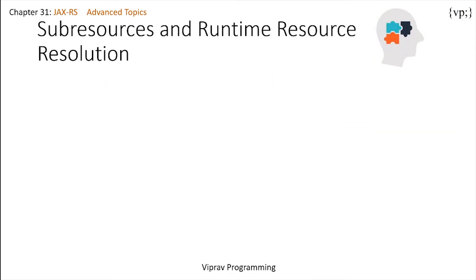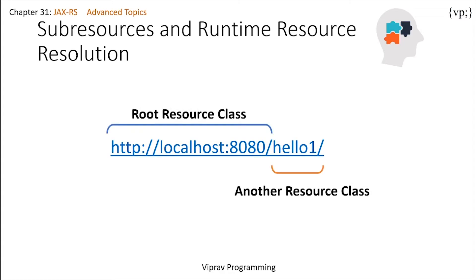Sub-resources and runtime resource resolution: you can use a resource class to process only part of the URI request. A root resource can implement sub-resources that process the remainder of the URI path. What that means is if all your URIs share a common part plus something else, you can keep that common part as a root resource class and the additional part as another resource class. This saves time because you don't have to write out the entire URI — all you have to write out is the additional segment.